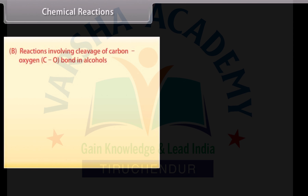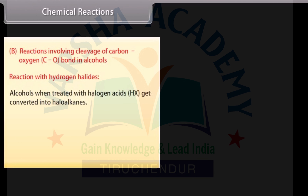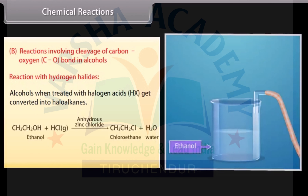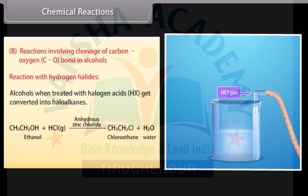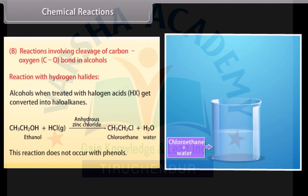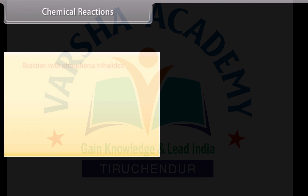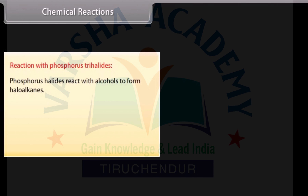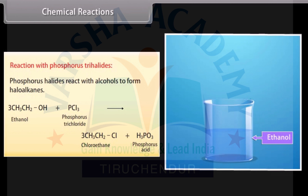Reactions involving cleavage of the carbon-oxygen bond in alcohols. Reaction with hydrogen halides: alcohols when treated with halogen acids get converted into haloalkanes. When hydrochloric acid gas is passed through ethanol in the presence of anhydrous zinc chloride, it forms chloroethane and water. This reaction does not occur with phenols. Phosphorus halides also react with alcohols to form haloalkanes; phosphorus trichloride reacts with ethanol to form chloroethane and phosphorous acid.